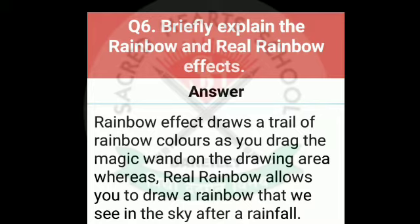Question number six: briefly explain the rainbow and real rainbow effects. The answer is, rainbow effect draws a trail of rainbow colors as you drag the magic vent on the drawing area. Rainbow effect se humaari rainbow colors banti hain — humari seven colors hain rainbow ke — toh saari rainbow colors ki poori trail drawing area mein banti hai jab hum mouse ko drawing area pe drag karte hain.